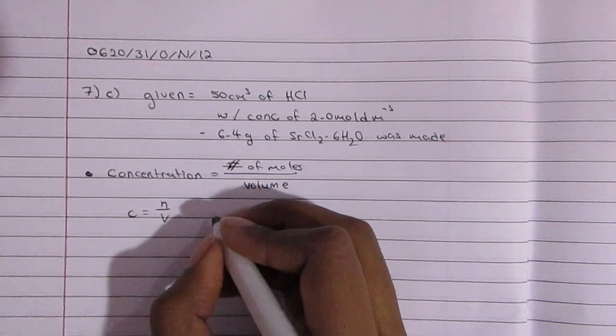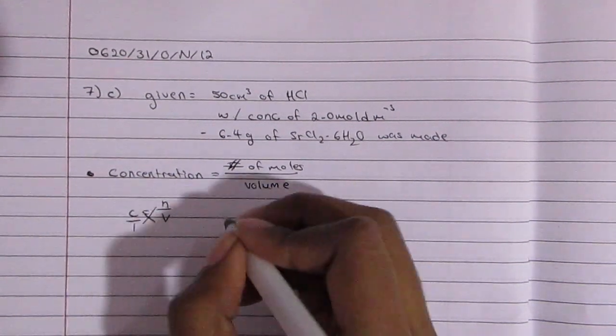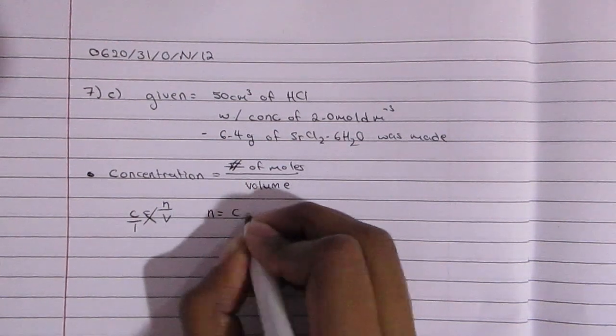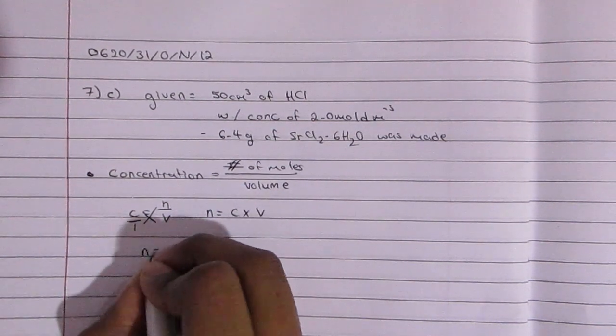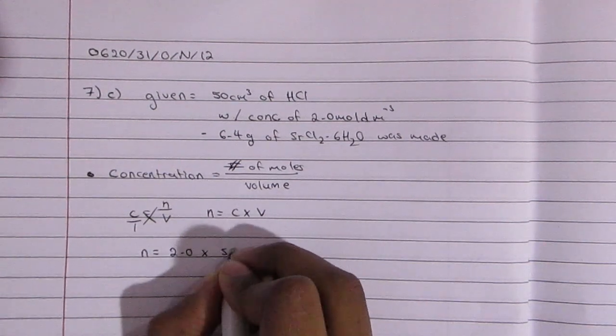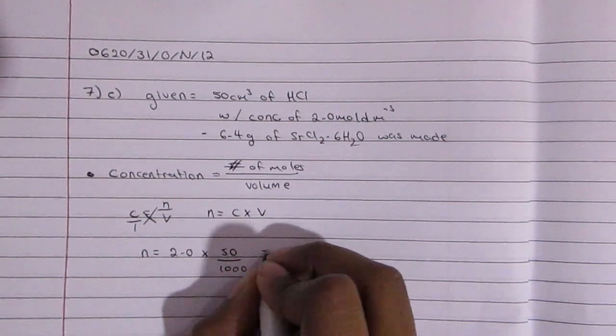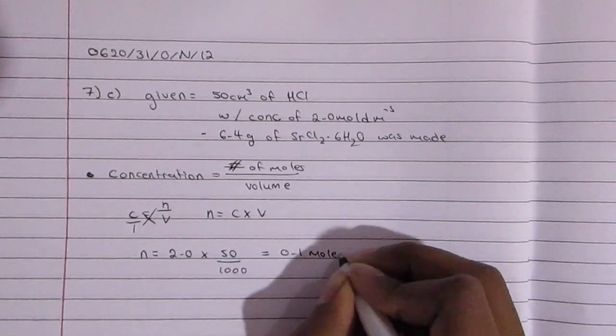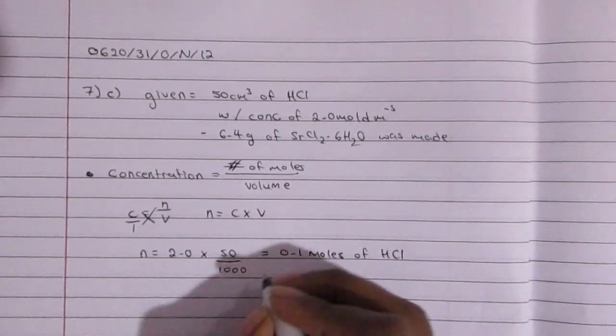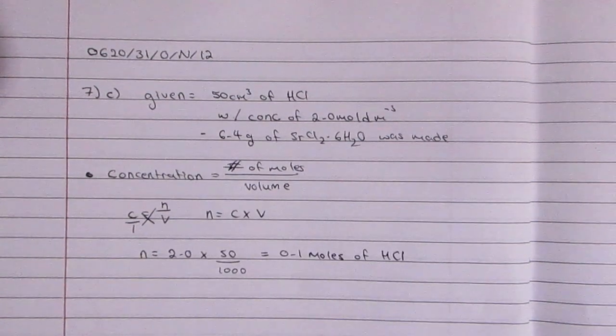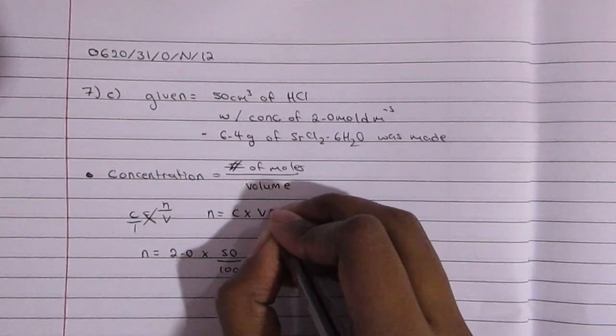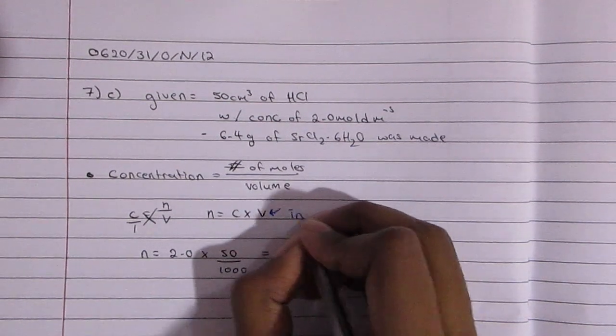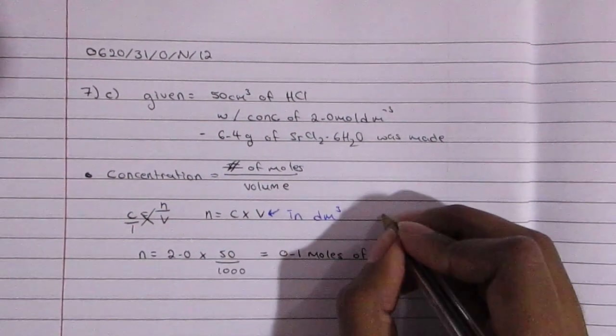So basically the concentration which is 2 times the volume which is 50, but here the problem is when you're using the volume it has to be in decimeters cubed. So that 50 you're going to end up dividing it by a thousand, that's because a thousand centimeters cubed gives you one decimeter cubed. So you divide by a thousand and then N would equal to 0.1 moles of HCl.